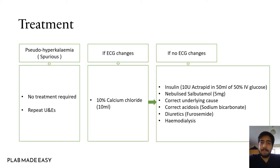The next step is to go for an ECG. If there are ECG changes, then you'll give calcium chloride to protect the heart membrane. This will not decrease the overall levels of potassium in the body.